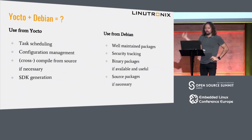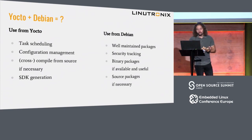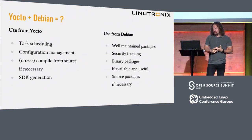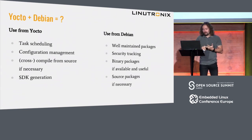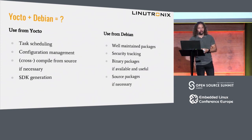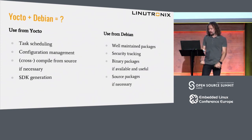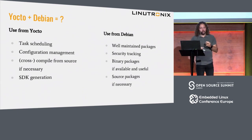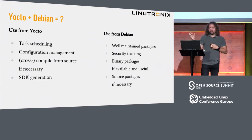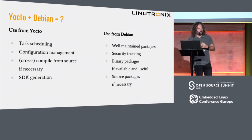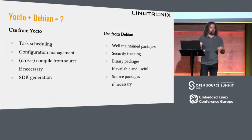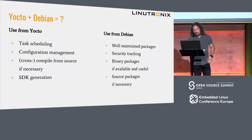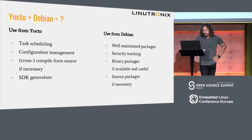On the other hand, I want to use some things from Debian: the well-maintained packages, the security tracking, and the binary packages whenever useful — because those get the most testing in the world since everybody uses the same binaries. And I want the possibility to use the Debian sources if necessary, so if I need to rebuild something with another configuration option or apply a patch, I want to use the Debian sources.